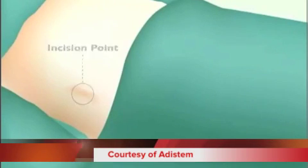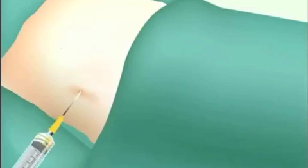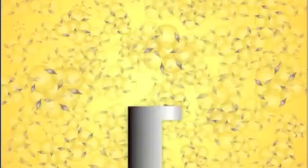First, 100 cc's of pure fat is extracted from the patient's own abdomen. The fat contains millions of dormant stem cells, seen here in purple. Yellow is fat.